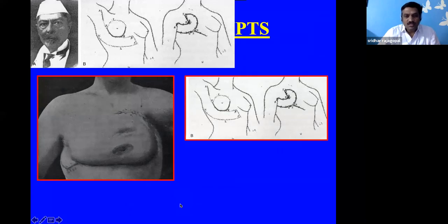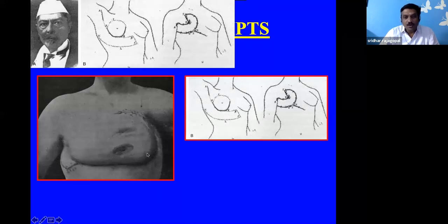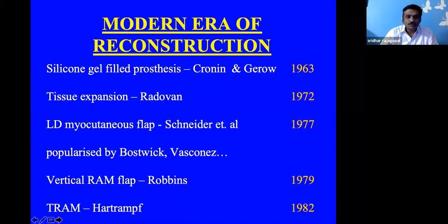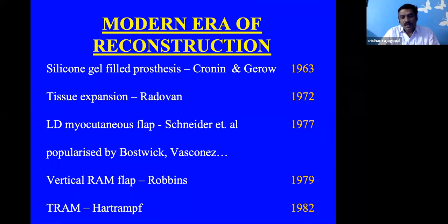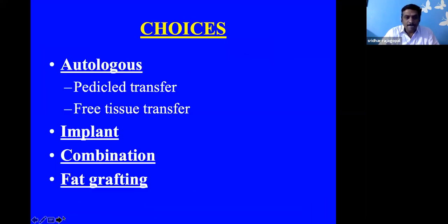These are old concepts of reconstruction. Initially, when mastectomy was done on the left side, they shifted the breast from the right to the left side. Then they tried the pectoralis minor muscle — by Morristin and Omrodon, who used the pectoralis minor to form a small mound with a flap to cover it. The modern era progressed from silicone gel prosthesis to tissue expanders and different flaps. Our current choices are autologous reconstruction, implants, a combination of both, or fat grafting. Among autologous options, we have pedicle transfer and free tissue transfer via microsurgical reconstruction.